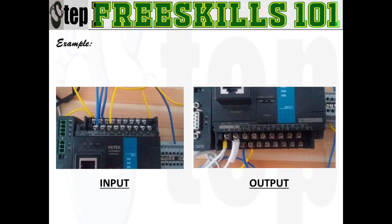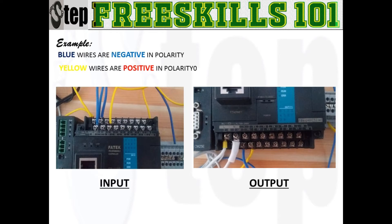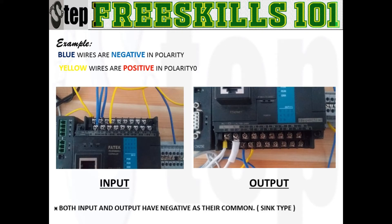Example of PLC termination: consider the blue wiring as negative and the yellow wiring as positive. At the input and output side, the polarity of the common are both negative, so they are called a sink type.